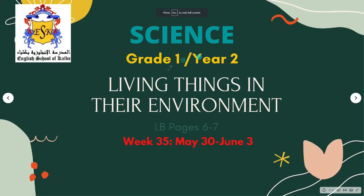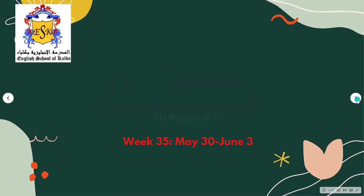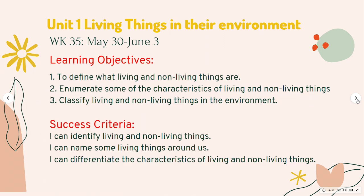Hello, future scientists! Today, we will define what living and non-living things are. We will enumerate some of the characteristics of living and non-living things. In this lesson, we will also classify living and non-living things in their environment. You can assess yourself at the end of the lesson if you can identify living and non-living things. Can you name some living things around us? And can you differentiate the characteristics of living and non-living things?